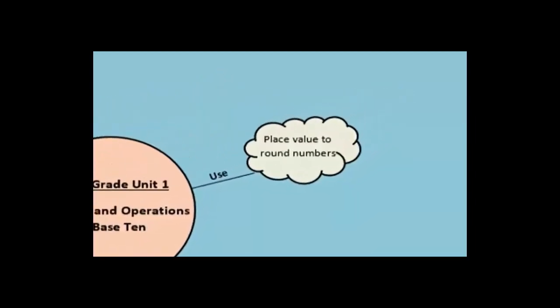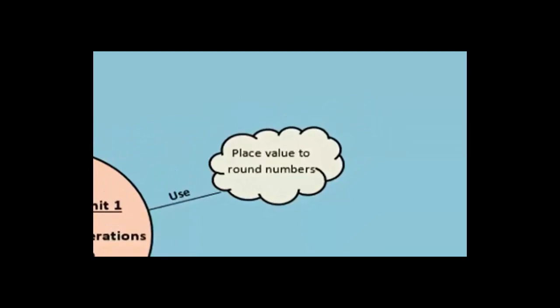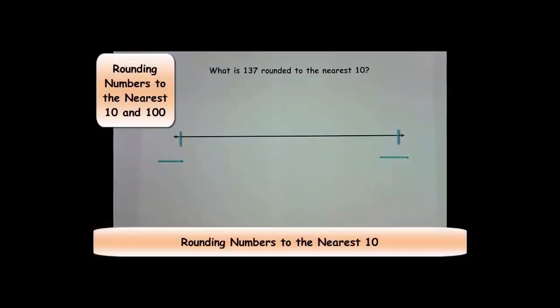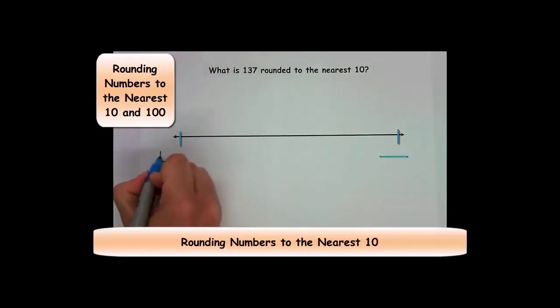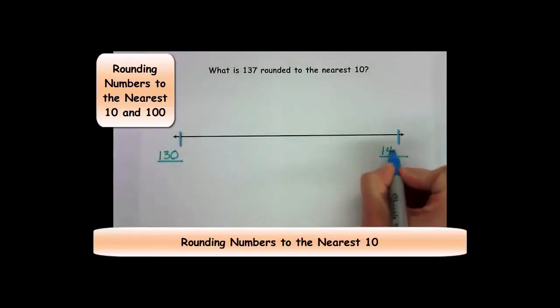The first area on the concept map that we are going to discuss is how students need to use place value to round numbers to the nearest 10 and 100. Let's do an example. What is 137 rounded to the nearest 10? The first thing that students should do is they need to figure out the benchmark numbers, the numbers that come at the beginning and the end of this number line. What numbers does 137 come in between? I know that 137 comes between 130 and 140.